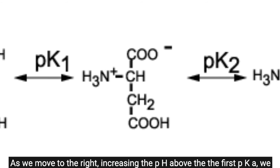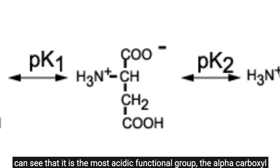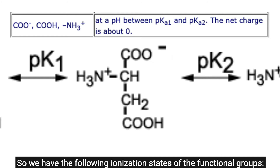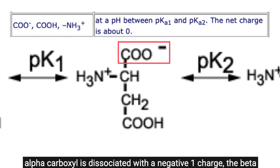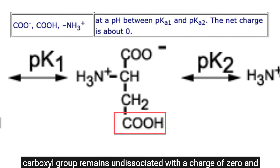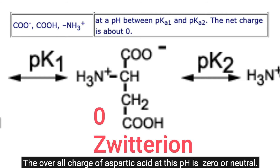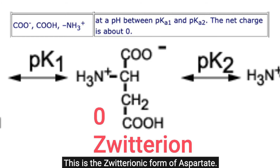As pH is increased above the first pKa, the most acidic functional group — the alpha-carboxyl group — dissociates first, becoming carboxylate or COO-negative. The ionization states are: alpha-carboxyl dissociated with a -1 charge, the beta-carboxyl group undissociated with a charge of 0, and the alpha-amino group protonated as NH3-positive with a charge of +1. The overall charge of aspartic acid at this pH is 0 or neutral — this is the zwitterionic form of aspartate.